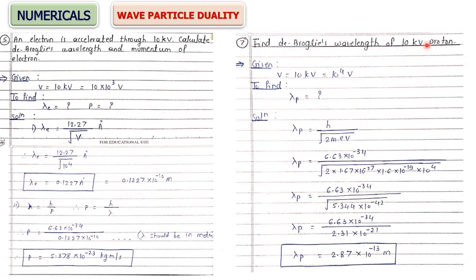Next: find de Broglie wavelength of a proton accelerated through 10 kilo-volts. Potential is given; convert to volts (10 kV = 10⁴ V). For proton, use λ = h / √(2meV) with mass of proton and charge of proton. There is a direct formula 0.286 / √V for proton (analogous to electron), but if you don't remember it, just apply the general formula with mass of proton.